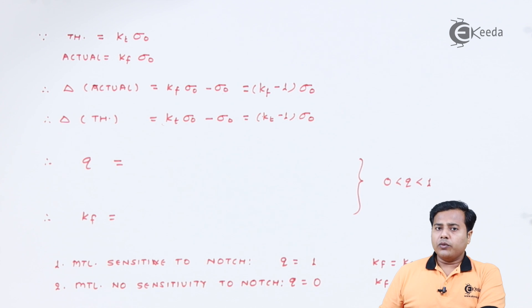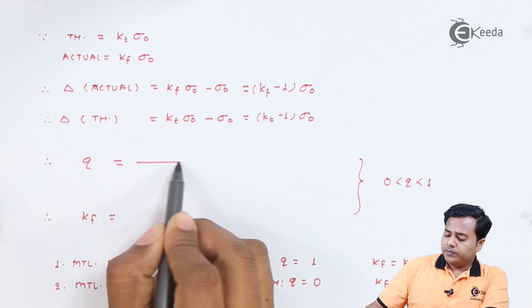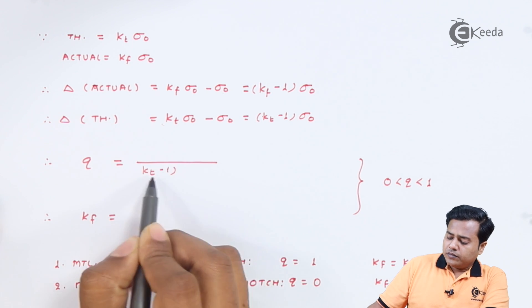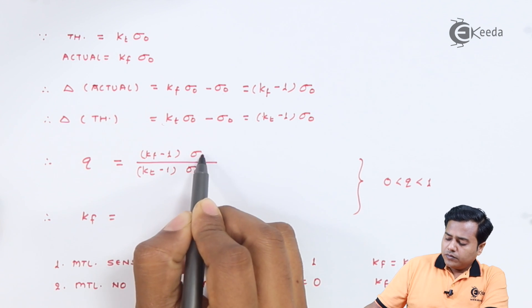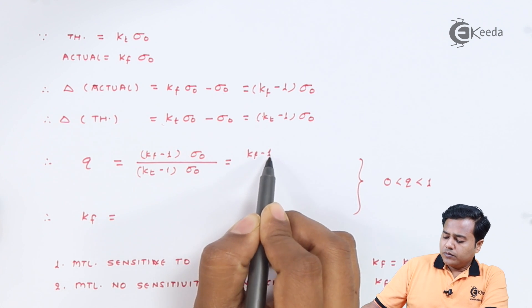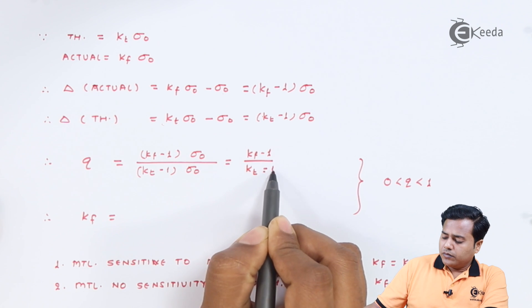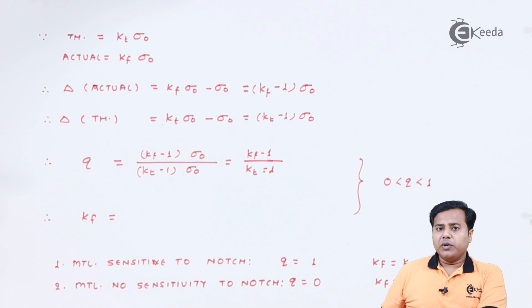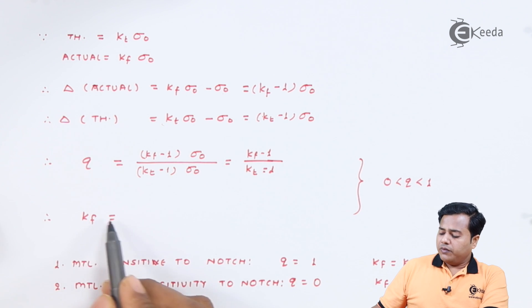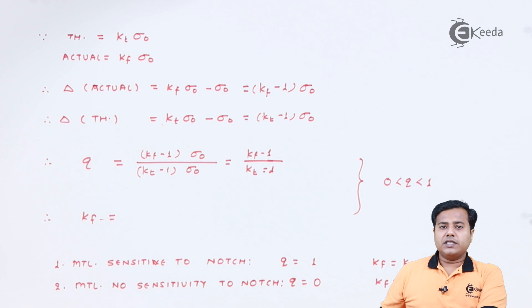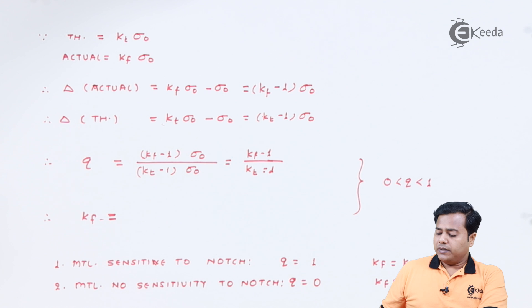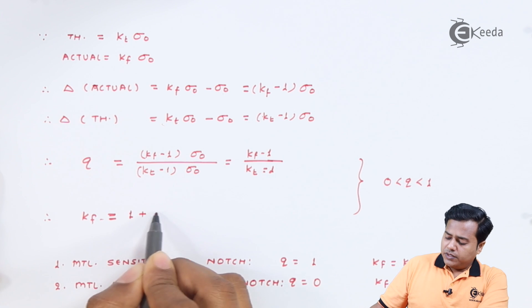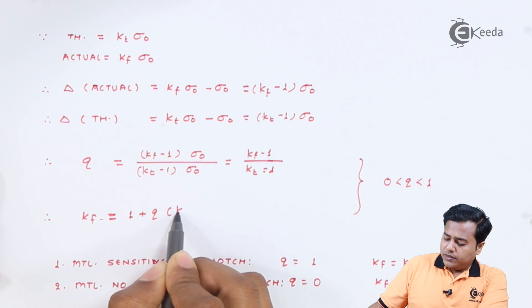So when q was found out, it was found that it was this simple ratio. But when we were supposed to find out the Kf, which is the factor in association, it was found that Kf is given by 1 plus q times (Kt - 1).